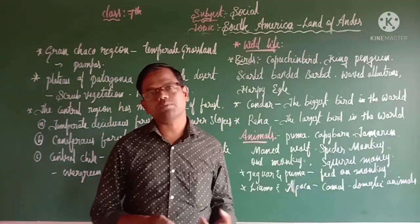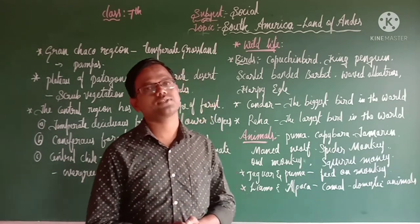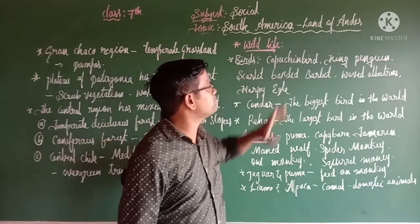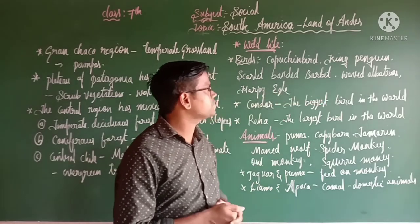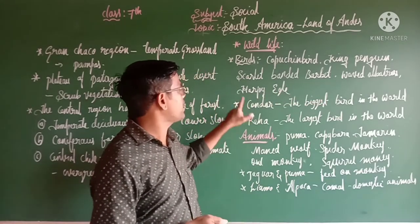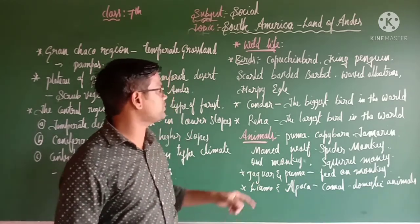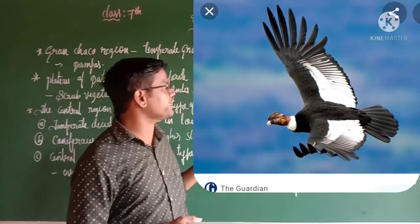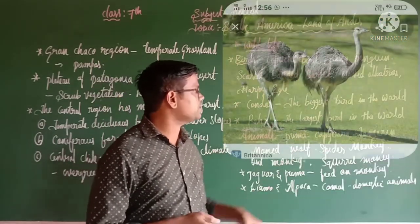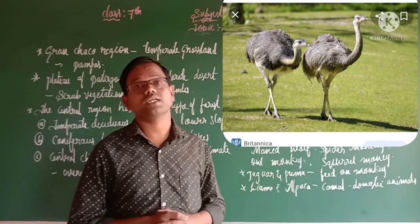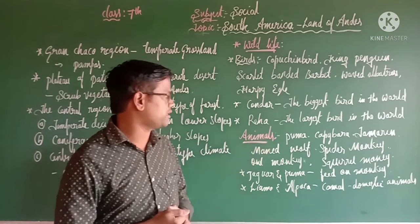South America has a variety of birds. The important ones include: capuchin bird, king penguin, scarlet-banded barbet, waved albatross, and harpy eagle. Two other very important birds are the condor — the biggest bird in the world — and the rhea, the largest bird in the world that cannot fly, similar to an ostrich.